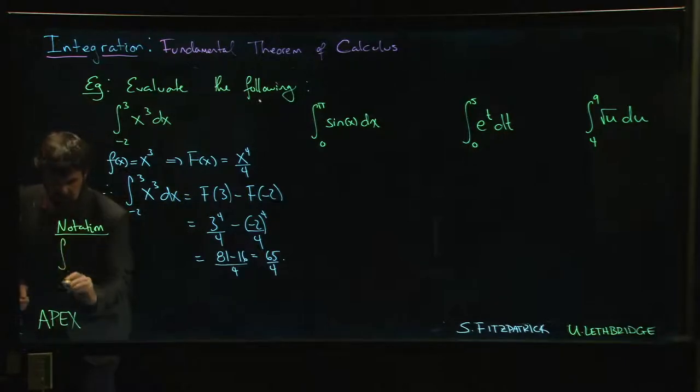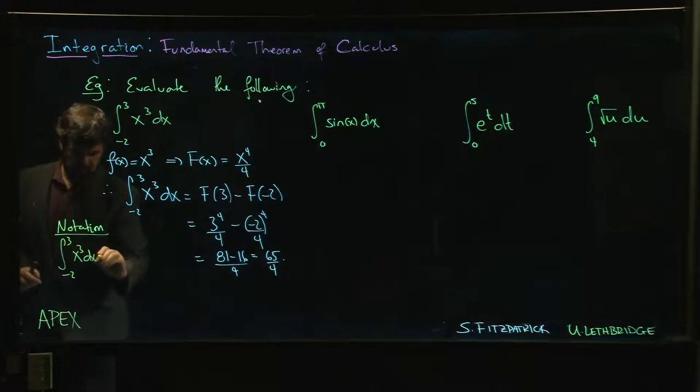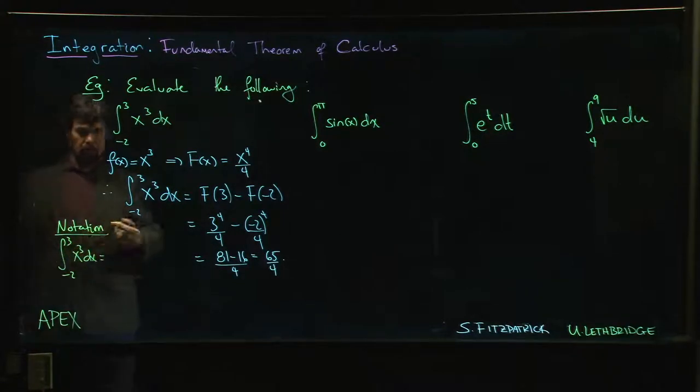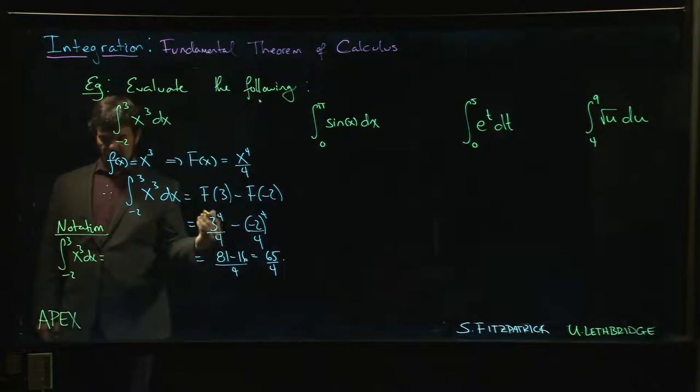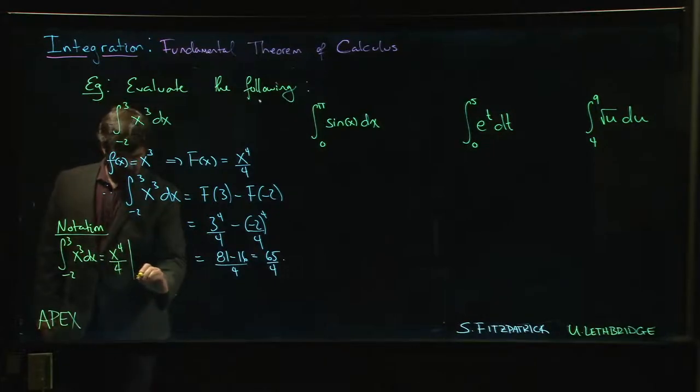We write the integral from -2 to 3 of x³ dx, then work out the antiderivative x⁴/4 (either on the side or in your head), and put in this vertical bar to indicate you'll plug in the endpoints.